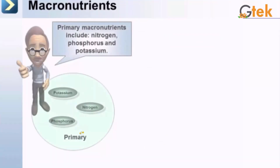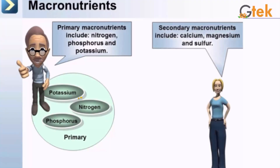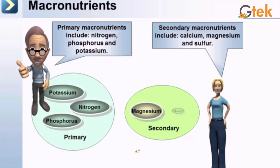Let us see about macronutrients. They are divided into primary and secondary macronutrients. The primary nutrients are nitrogen, phosphorus, and potassium. The secondary macronutrients are calcium, magnesium, and sulfur, as shown here.